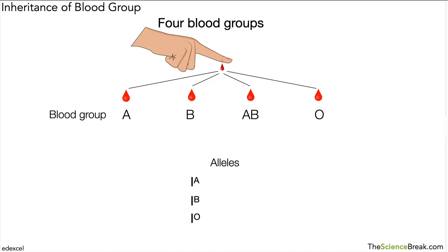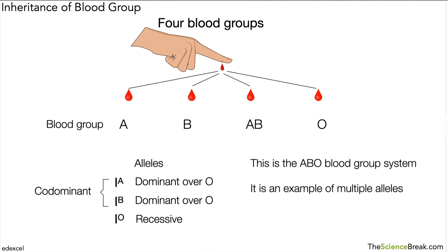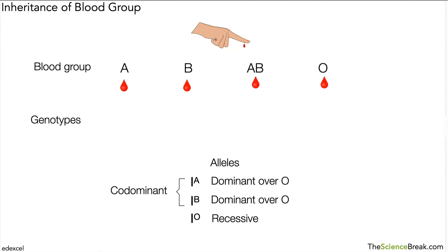It's important to remember how these relate to each other. A is dominant over O, and B is also dominant over O, meaning O is recessive for both A and B. Quite interestingly, A and B are what we call co-dominant — neither is dominant over the other, which is why we can have blood group AB. This is the ABO blood group system and it's an example of multiple alleles where a person can only ever have two alleles but there are more than two alleles for this characteristic.